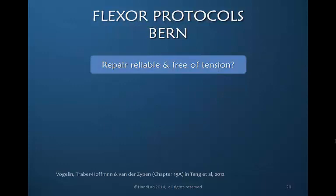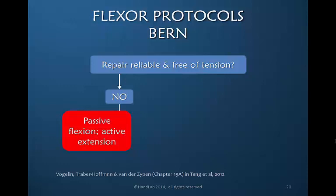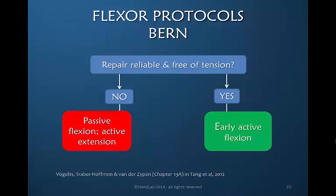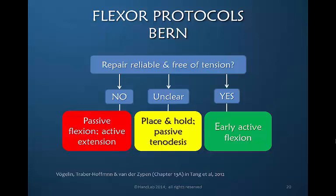Looking at a specific protocol from Bern in Switzerland, they began by asking the question: is the flexor tendon repair reliable and free of tension? If the answer is no, they choose a protocol for passive flexion and active extension. If the repair is reliable and free of undue tension, they then choose an early active flexion protocol — so their choice of protocol is dependent upon the quality of the repair. If it's unclear whether the repair is reliable and free of tension, they would begin place-and-hold as well as passive tenodesis in order to regain glide.